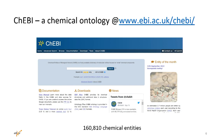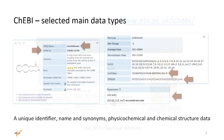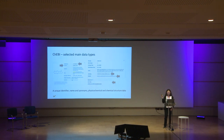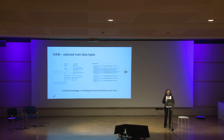A few words on ChEBI, the primary source of ligand annotation in UniProt. ChEBI stands for Chemical Entities of Biological Interest. It is a reference ontology for small chemical compounds that uses the same standards as other databases like HMDB. In the last release, ChEBI contains a bit more than 160,000 chemical entities. ChEBI provides a unique identifier for each compound, names, synonyms, physico-chemical and chemical structure data like InChI and SMILES — computer-readable representations of chemical structure. All fields marked with an arrow are searchable in UniProt. ChEBI also provides a chemical ontology that includes structural classification, such as ISA relationships, and also provides roles.